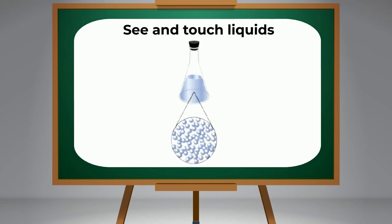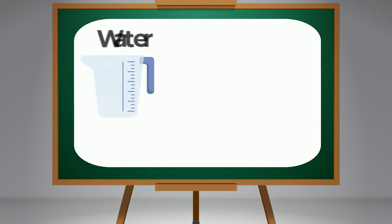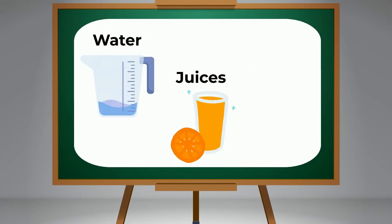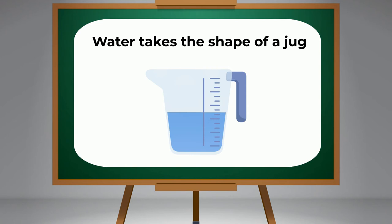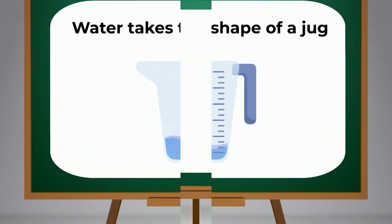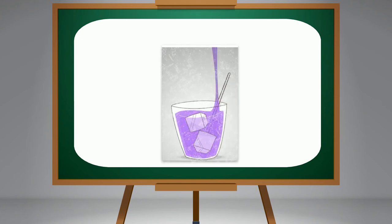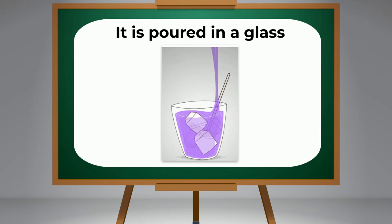We can see and touch liquids just like solids, but they are wet to the touch. Water, juices, petrol—these are all liquids and they change their shape when they are poured from one container to another. For example, water takes the shape of a jug when it is in a jug, but when it is poured in a glass, it changes its shape to the shape of the glass.